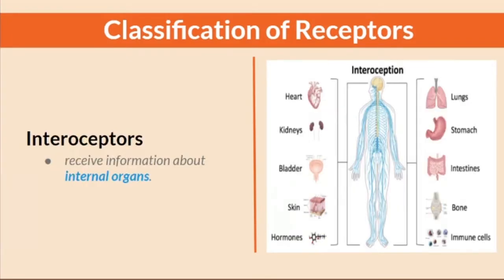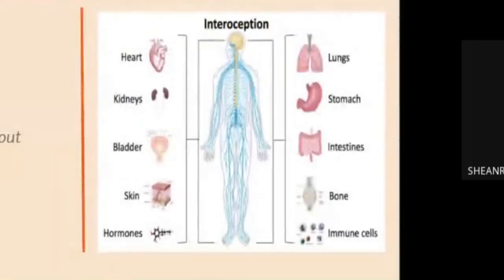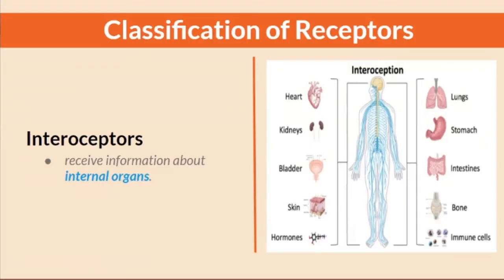Interoceptors receive information about internal organs. These include the heart, kidneys, bladder, skin, hormones, lungs, stomach, intestines, bone, and immune cells.